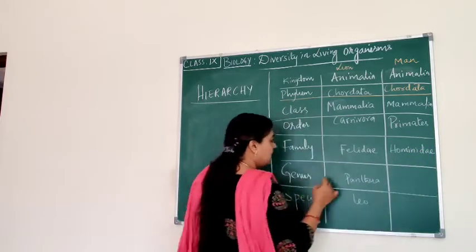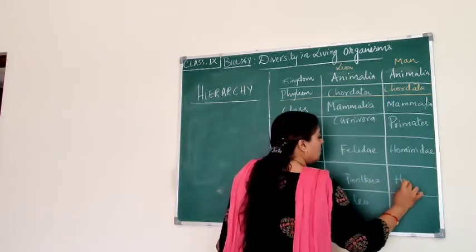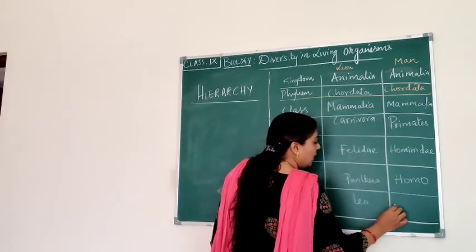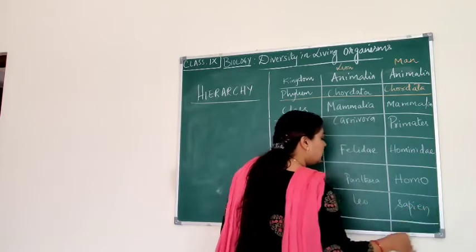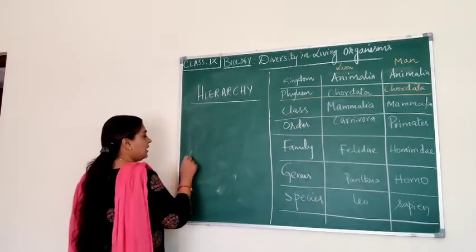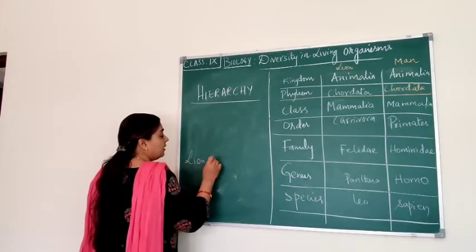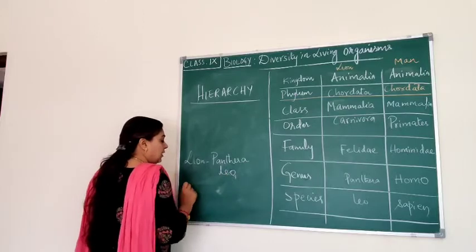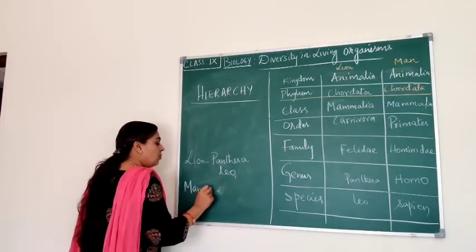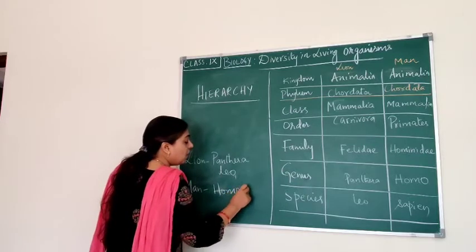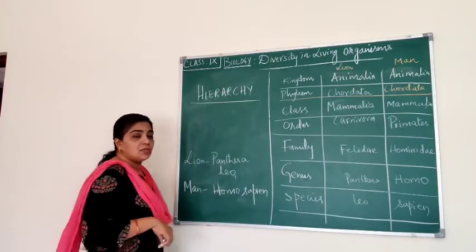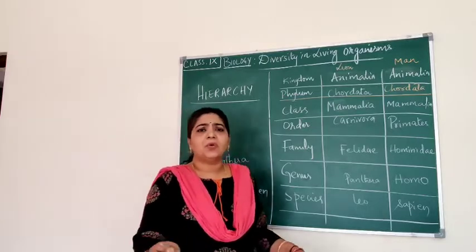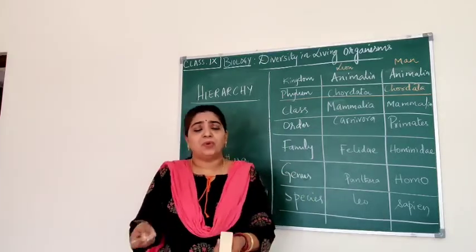Coming to family, lion belongs to family Felidae, and we belong to family Hominidae. For genus, lion's genus is Panthera, and our genus is Homo. For species, lion is Leo and we belong to species Sapiens. So the scientific name of lion is Panthera leo, and for man it is Homo sapiens.